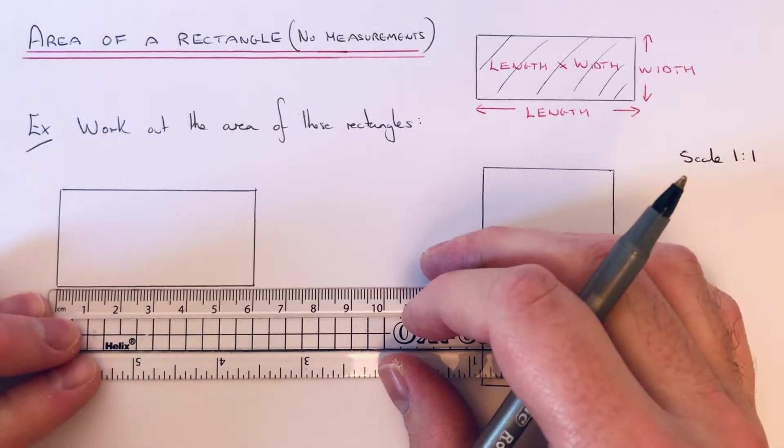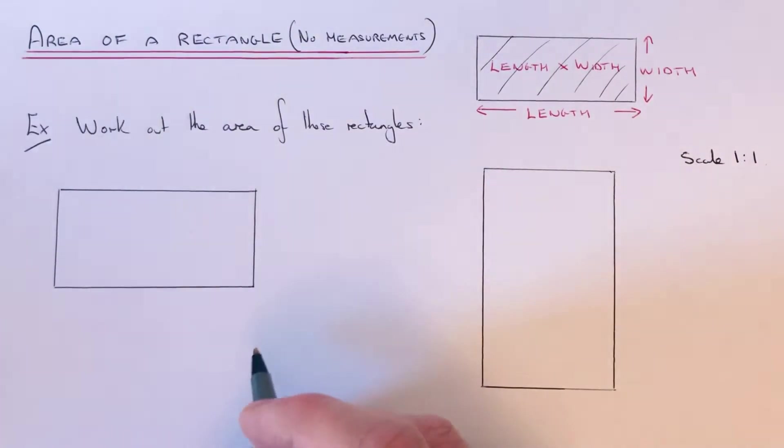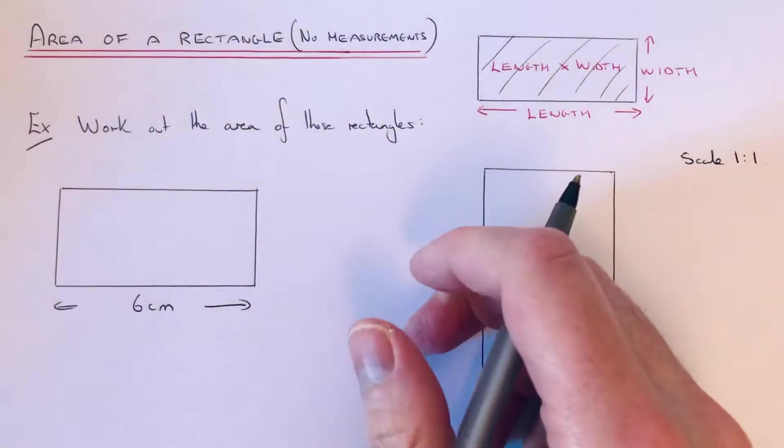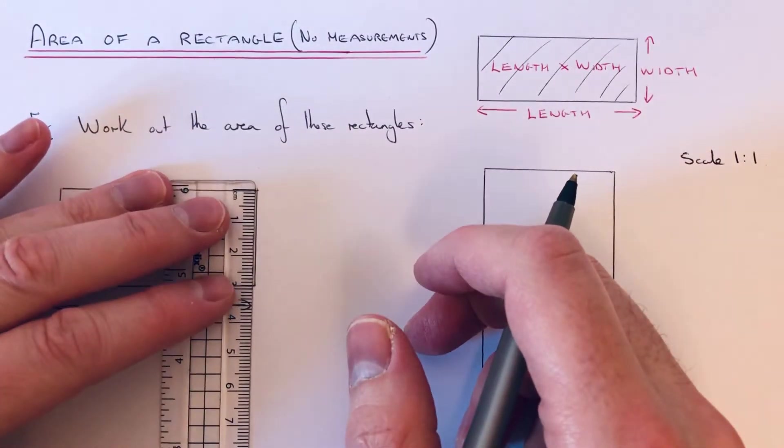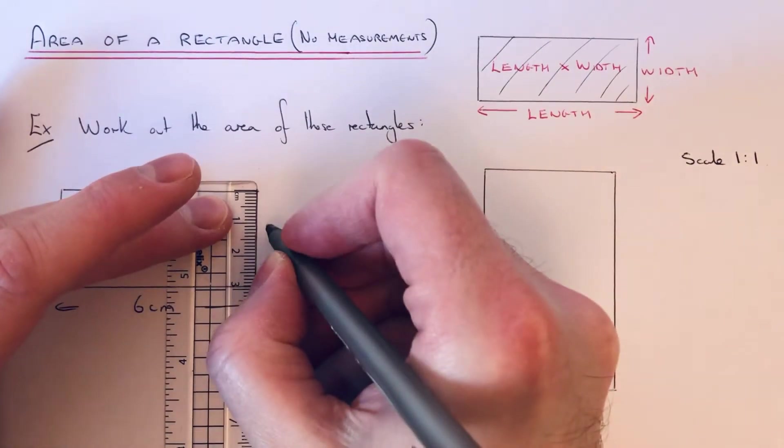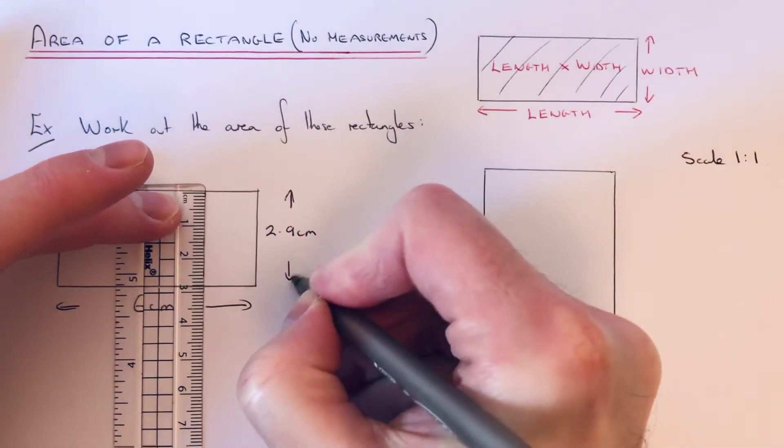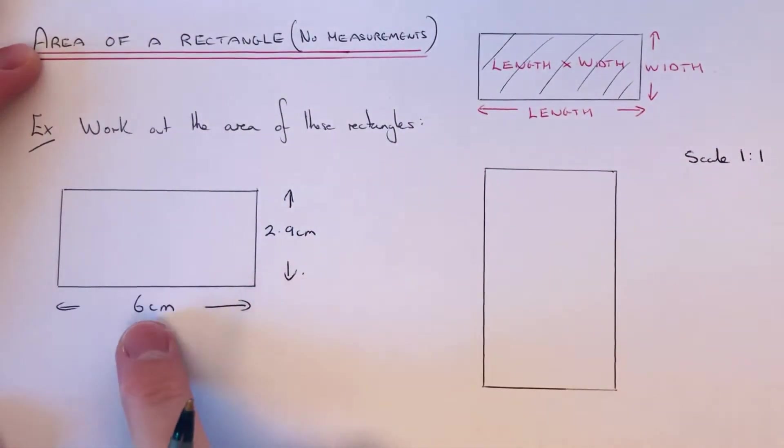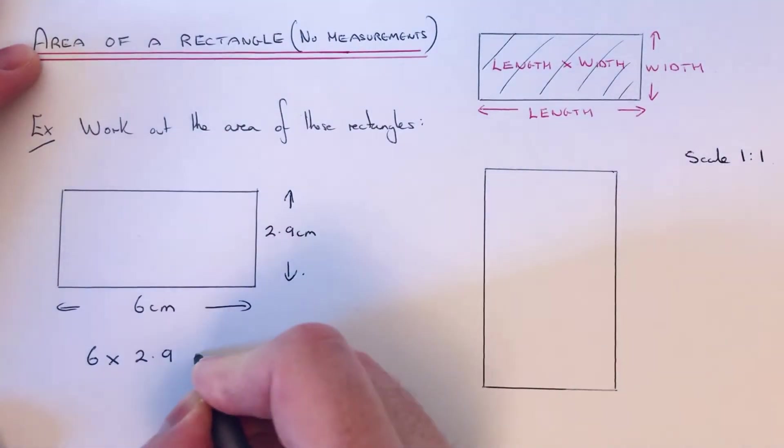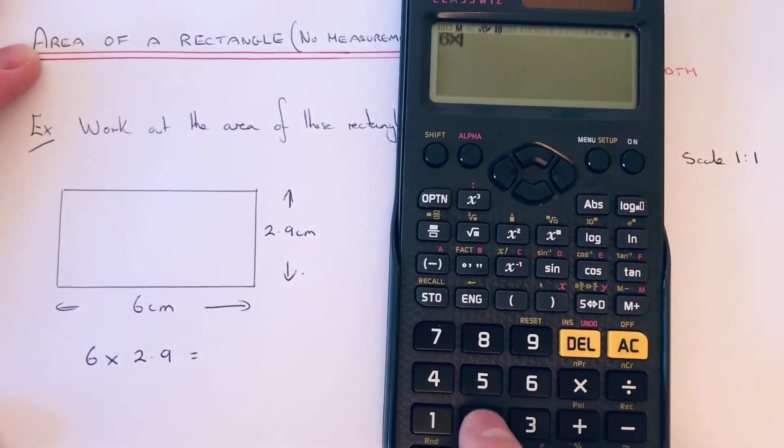So the length of the rectangle on the first one is 6 centimeters, and then the width of the rectangle is 2.9 centimeters. So to find the area, we need to multiply these two measurements together, so 6 times 2.9.